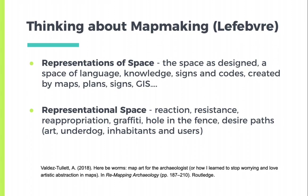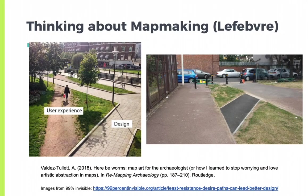Representational space is a reaction to this structure — it's resistance, reappropriation, such as graffiti, a hole in the fence, desire paths — and emphasizes the users of the space. The image on the left comes up a lot in discussions of user experience design: representations of space would be the paving, whereas representational space is the dirt path that people actually walk on. The example on the right shows how a representational space could be made into a representation of space. The University of California, Berkeley followed the approach of waiting to see where students walk, and then paved the resulting paths, showing responsiveness to user experience.